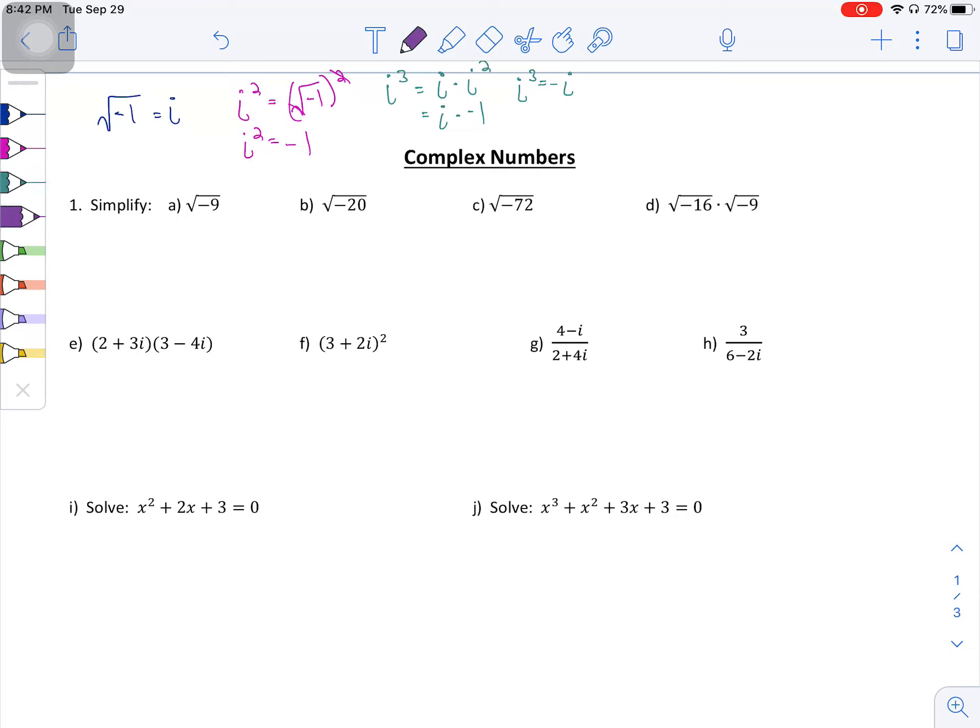And last but not least is i to the fourth power. i to the fourth power is basically, you could rewrite this as i squared times i squared. Well, i squared is negative one. Another i squared is negative one. So i to the fourth power is equal to a positive one.